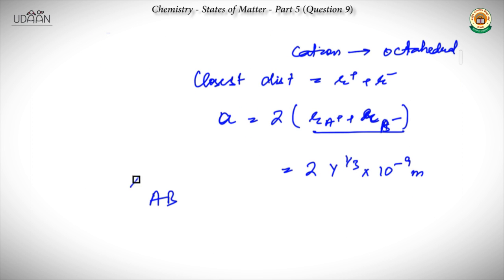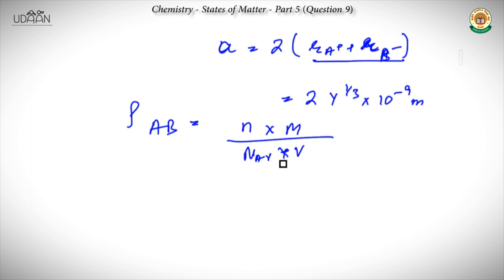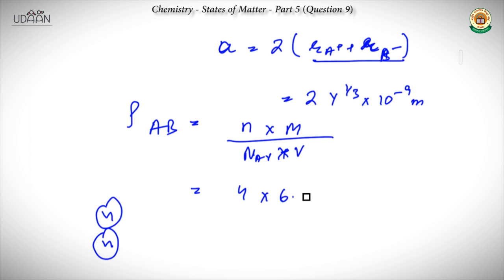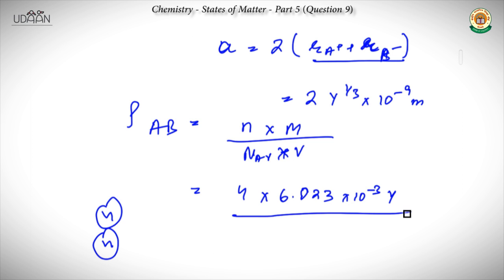To find the density of AB, we apply the formula: density equals N into molar mass divided by Avogadro's number into volume. For rock salt structure, the effective number of formula units is 4. The molar mass is 6.023 AMU and Avogadro's number is 6.023 into 10 to the power 23, with edge length 2y to the power 1/3 into 10 to the power minus 9 meter, cubed.